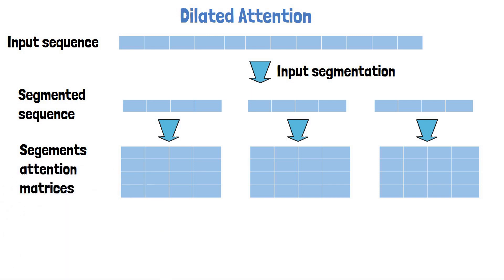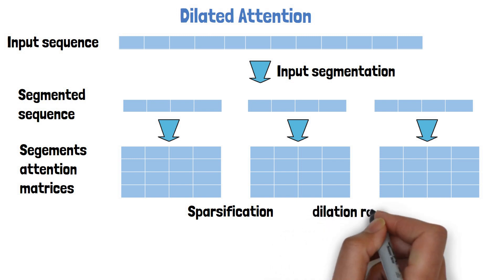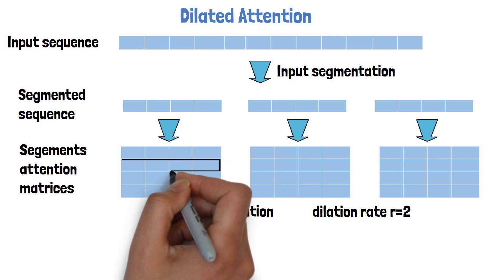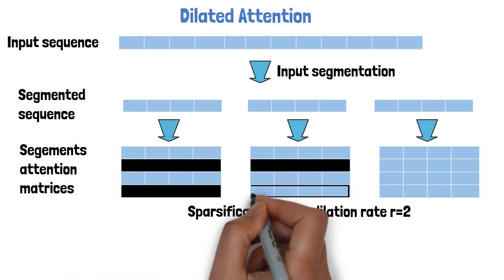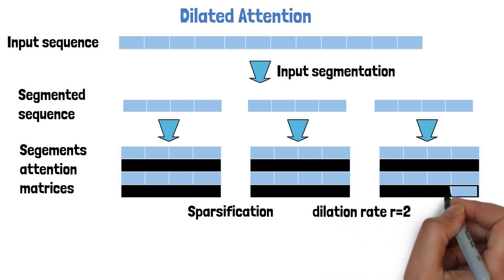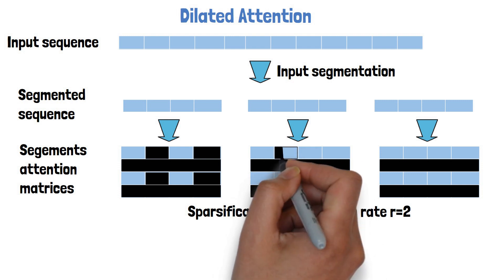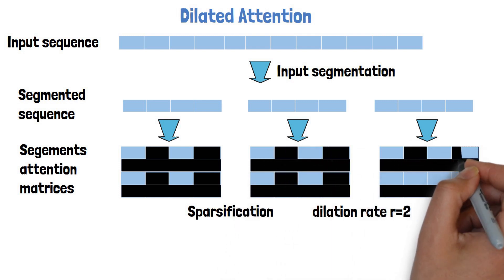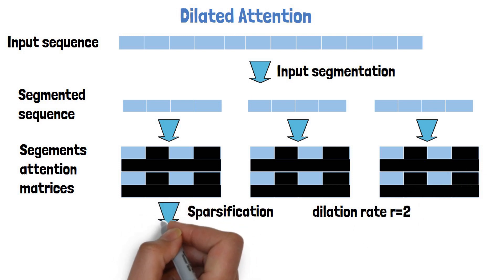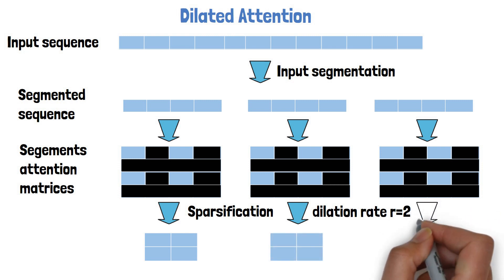The dilated attention has another step, which is sparsification, where we remove rows from each segment based on the parameter R, which controls the distance between each removed rows. So in the example here R is 2, so we keep rows 1 and 3 in each segment attention matrix. If we remove the 2nd and 4th rows, we also cannot attend to them from the remaining rows, so the matching cells are also removed. Finally, we get from each segment attention matrix a sparse attention matrix of 2x2, which is way smaller than the original 12x12.